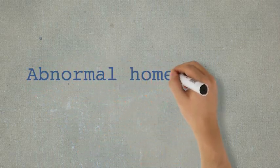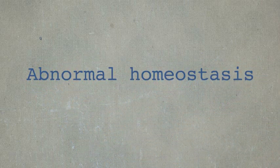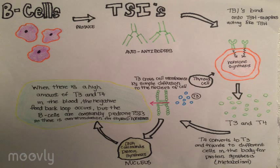In the setting of Graves' disease, the immune system produces auto-antibodies known as TSIs — thyroid-stimulating immunoglobulins. They act the same as TSH released by the pituitary. The auto-antibodies bind to the TSH receptor and stimulate the thyroid gland to produce more hormones than the body needs, mostly through T3 stimulation. This overproduction of thyroid hormones is called hyperthyroidism.